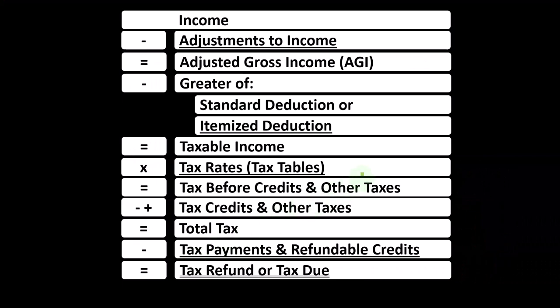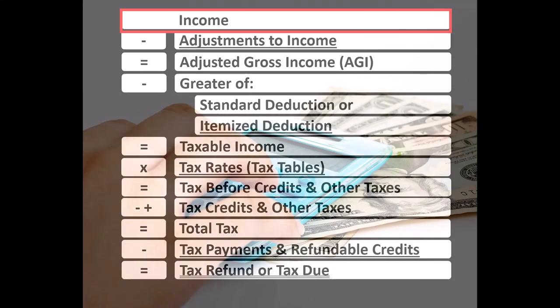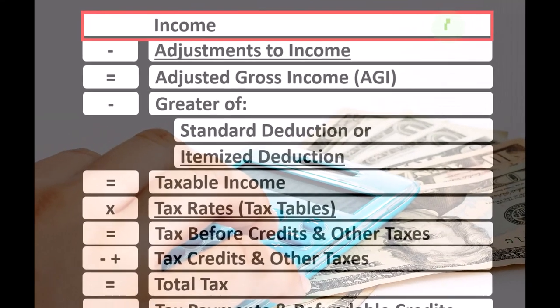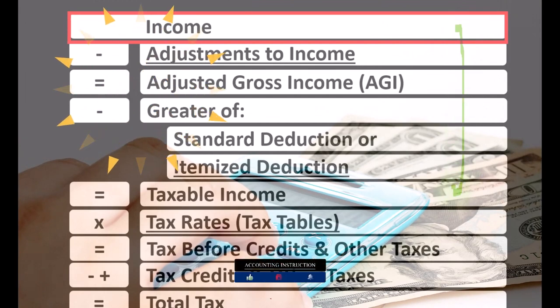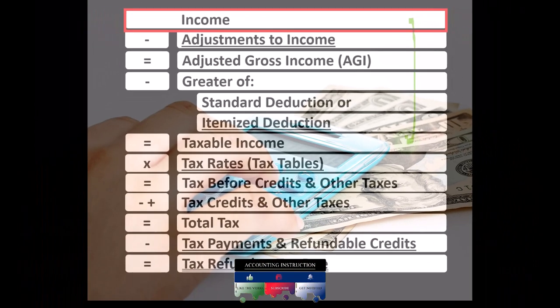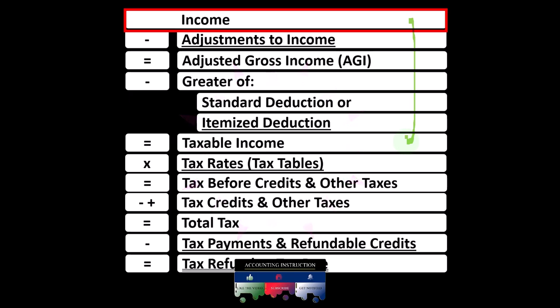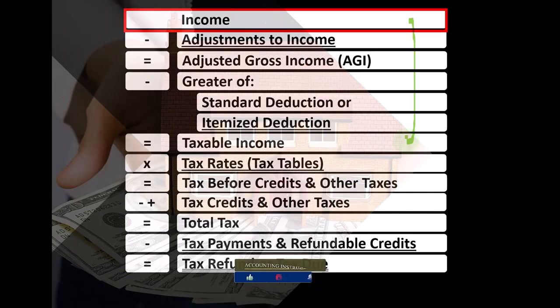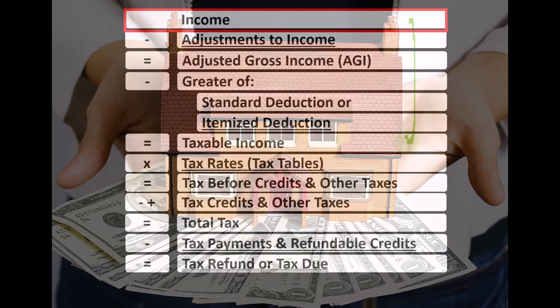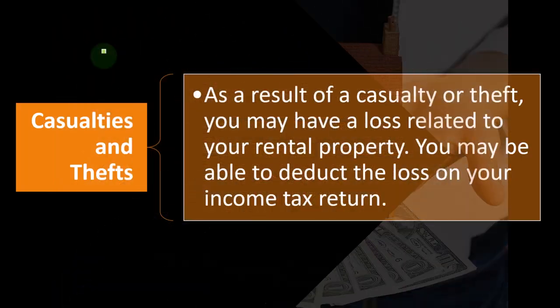Looking at the income tax formula, we're focused on line one income. Remember the first half of the income tax formula is essentially an income statement outline, with other forms and schedules flowing into it like the Schedule E, which is in essence an income statement with rental income minus rental expenses, the net rental income rolling into line one income.